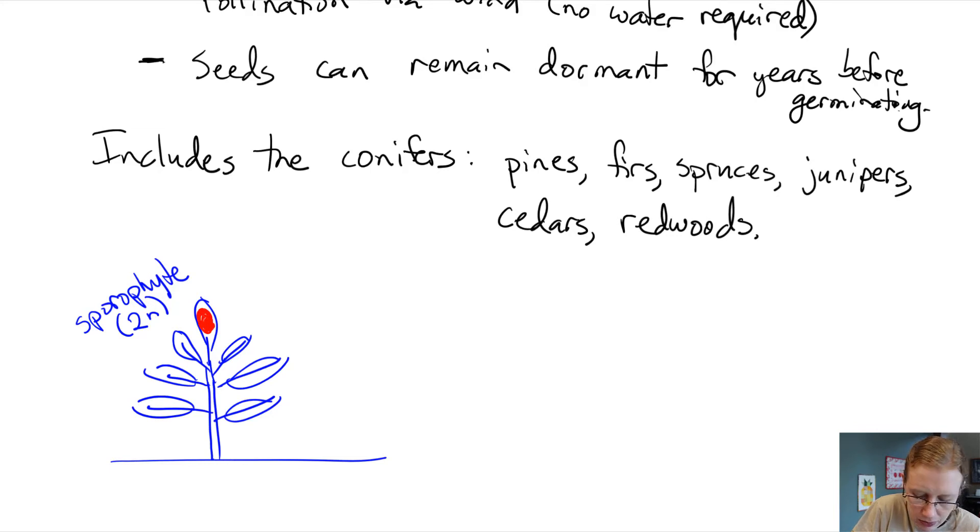And that cone is protected by the sporophyte body. So there's kind of like a casing that protects the gametophyte. In red here, this is the gametophyte, which is haploid.